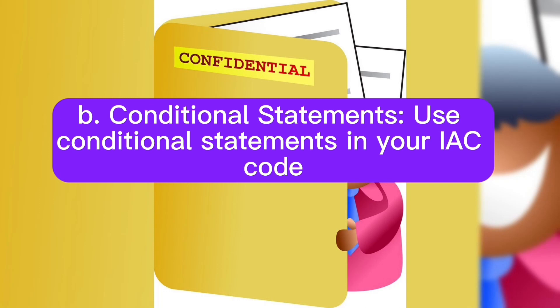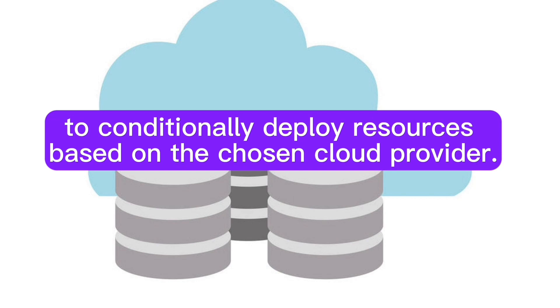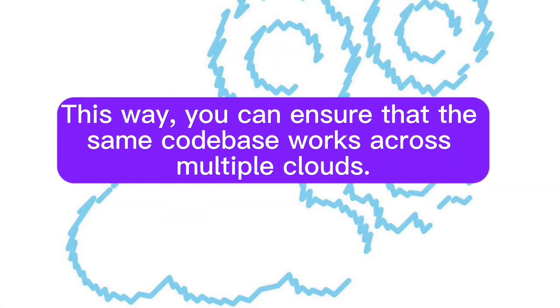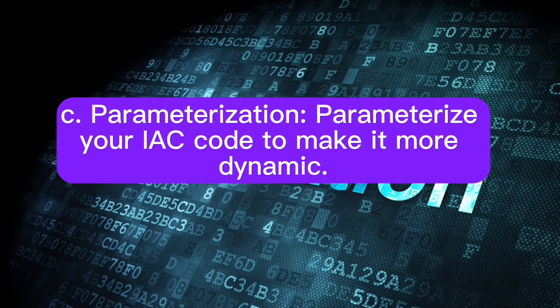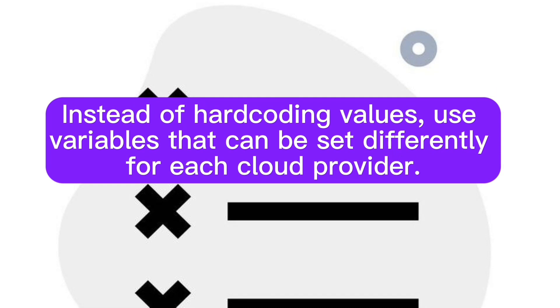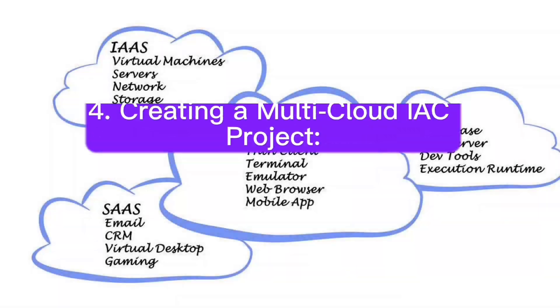B: Conditional statements. Use conditional statements in your IAC code to conditionally deploy resources based on the chosen cloud provider. This way, you can ensure that the same code base works across multiple clouds. C: Parameterization. Parameterize your IAC code to make it more dynamic. Instead of hard-coding values, use variables that can be set differently for each cloud provider.